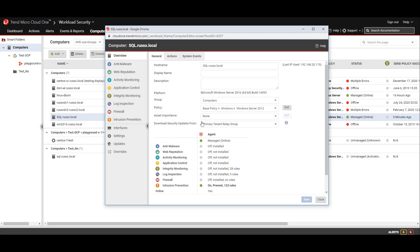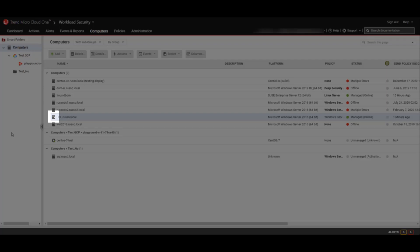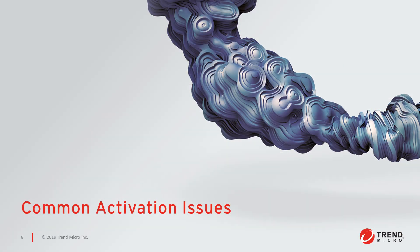Since this computer is not part of a connector in my manager, I can see that a manually created computer object was made, differentiated by the icon next to the name of the computer and the group the computer is a member of. We've now successfully activated an agent, but what if the activation fails? In this next section of the video, we'll review some of the common issues related to manager or agent initiated activation, and step through a troubleshooting flowchart for each type of activation.